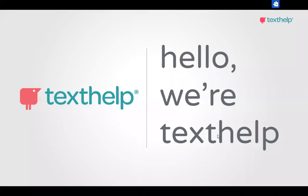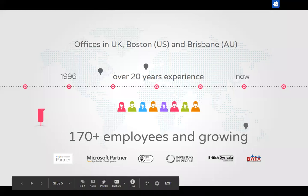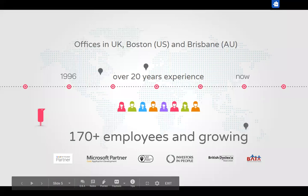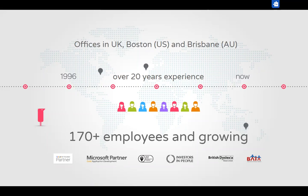Let me start by telling you a little bit about Texthelp. We are headquartered in Ireland — you can probably tell by the accents — and we have over 20 years' experience in providing education and workplace support to individuals with neurodiverse conditions. We started out in a small town called Antrim and we're still there, but we now also have a global presence with offices in Boston in the US and in Brisbane, Australia, with a huge network of channel partners spanning the globe.